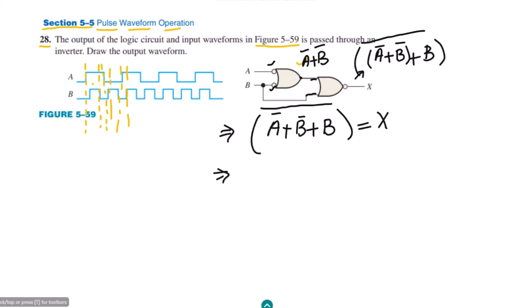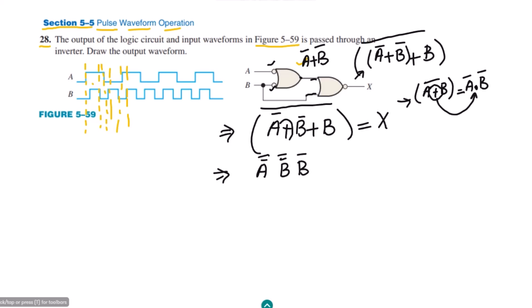Now let me apply De Morgan's Law. According to De Morgan's Law, if we have expression (A + B) whole complement, it becomes the complement of the first term times the complement of the second term — the operation inverts from addition to multiplication. Applying the same concept here, we get: complement of A complement, times complement of B complement, times complement of B. Since these were additions, they become multiplications.